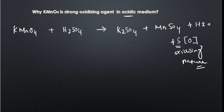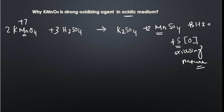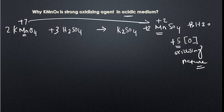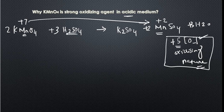Balancing the equation: 2KMnO4 + 3H2SO4 gives K2SO4 + 2MnSO4 + 3H2O + 5[O]. The oxidation state of Mn in KMnO4 is +7, and in MnSO4 it is +2. So Mn has gone from +7 to +2, meaning it itself got reduced, and in doing so it has given 5 nascent oxygen along with the acid. This 5 nascent oxygen is key to the oxidizing nature of KMnO4 in acid medium.